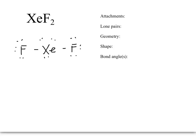And finally, xenon difluoride. There are two fluorines attached to the central atom. And there are three lone pairs on the central atom. One, two, three. So two plus three is five.